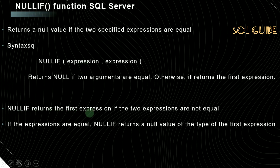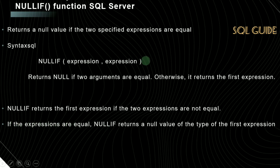NULLIF returns the first expression if the two expressions are not equal. If both are equal, it returns null. If the expressions are equal, NULLIF returns null of the type of the first expression.